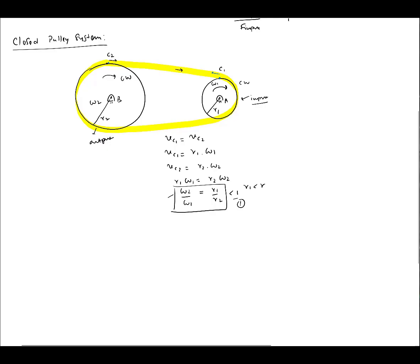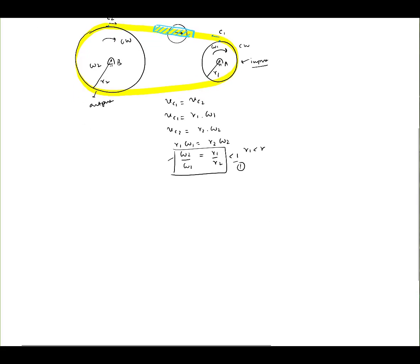We start by assuming that the rope going over the pulley is inextensible — it doesn't stretch or contract. This allows us to say that the tension in parts of the belt remains uniform. Looking at a small portion of the belt and drawing a free body diagram, the belt is in tension T₁. If the belt is inextensible, the tension is uniform at least in the upper part of the belt.